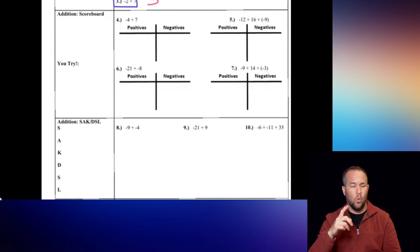Pause the video and try questions 6 and 7. For number 6, the positives got 0 points and the negatives got a total of 29 points. The negatives won by 29, so the answer is negative 29. For number 7, the negatives got 9, the positives got 14, and the negatives got 3 more, making it 14 to 12. The positives won by 2, so our final answer is 2.